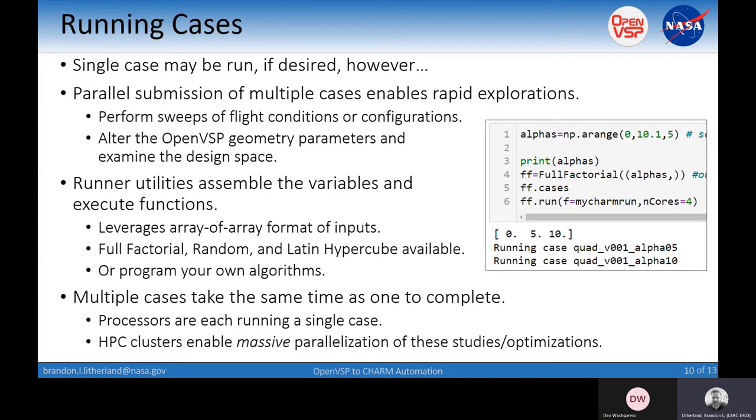The runner utilities assemble all these variables that you define as an array of arrays to any type of execution: full factorial, random, Latin hypercube, or you can write your own. The really cool thing is as long as you have these parallel processors, each case is run on a single processor. If you're on a cluster that has 40 or 100 or 1000 processors available, you can run up to that number as long as you have that many licenses. In the time it takes to run one case, you can run 40 or 100 or 1000 in the same amount of time.